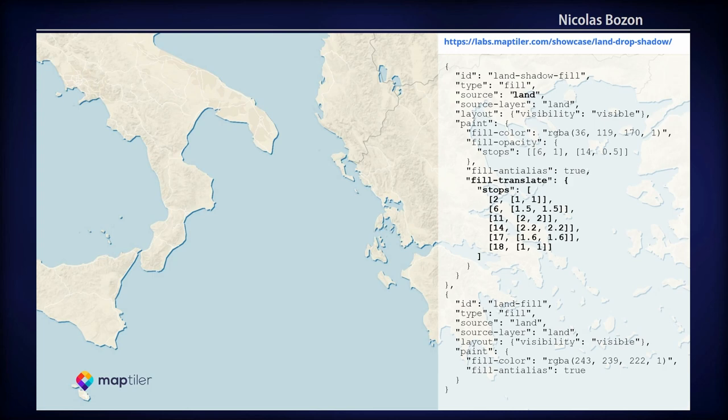We also added an extra line layer using the same land data source, creating an additional glow around the coastline to emphasize the drop shadow. This is done with line width and line blur properties that need to be adjusted.